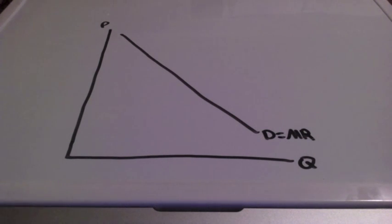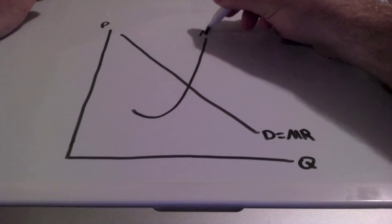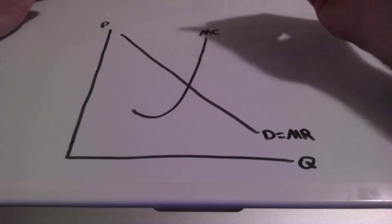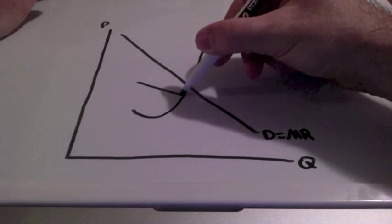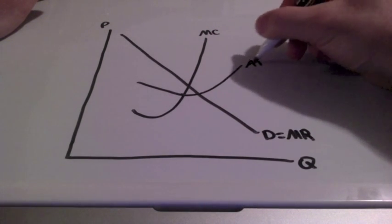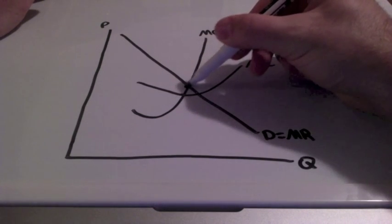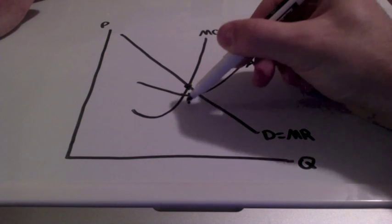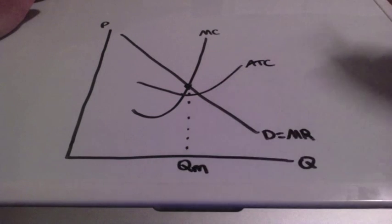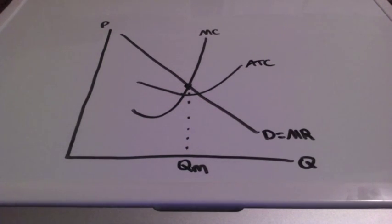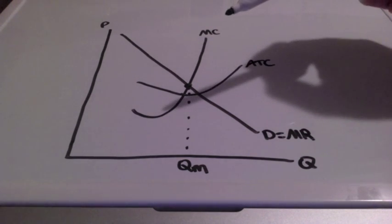The first thing we need to find is the profit maximizing quantity, so we need to label marginal costs and draw our average total cost curve. We find the intersection of where marginal revenue equals marginal cost. When we have a firm that is willing to lower their prices, it represents the law of demand — charging different prices according to various quantities.